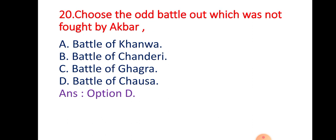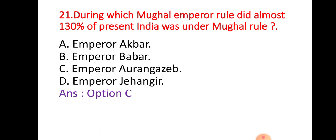Question 20: Choose the odd battle out — which was not fought by Akbar? Option A: Battle of Khanwa; Option B: Battle of Chanderi; Option C: Battle of Karga; Option D: Battle of Chausa. The right answer is Option D — Battle of Chausa. The Battles of Khanwa, Chanderi, and Karga were all fought by Akbar, whereas the Battle of Chausa was not.